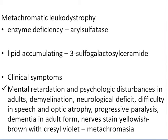Metachromatic leukodystrophy involves a deficiency of arylsulfatase, with accumulation of 3-sulfogalactosyl ceramide. Clinical symptoms include mental retardation, psychological disturbances in adults, demyelination, neurological deficits, difficulty with speech, optic atrophy, progressive paralysis, and dementia. Tissues stain yellowish-brown with cresyl violet showing metachromasia.